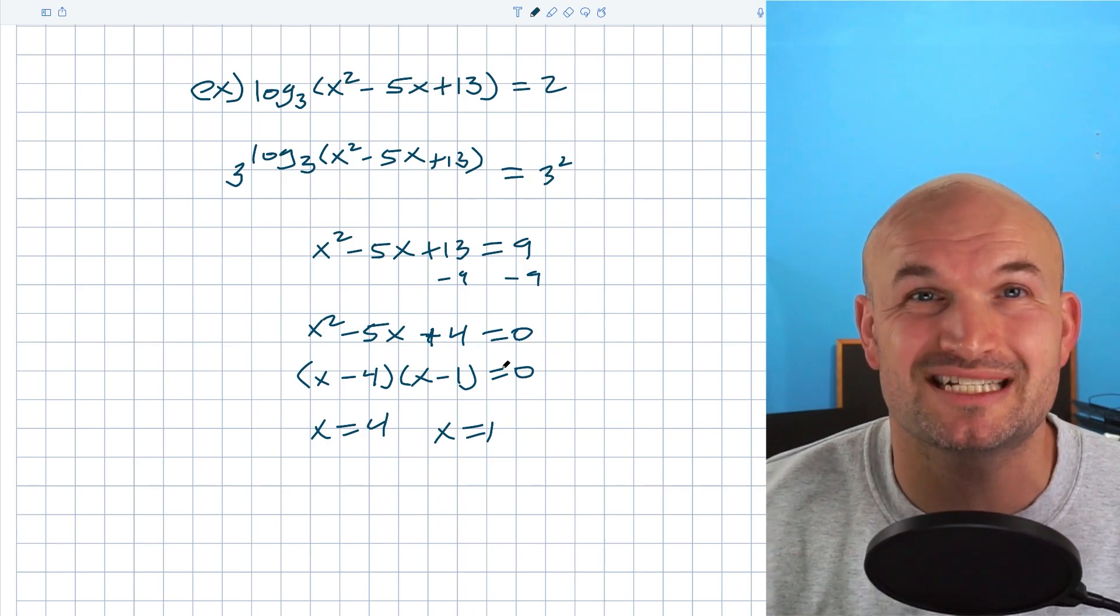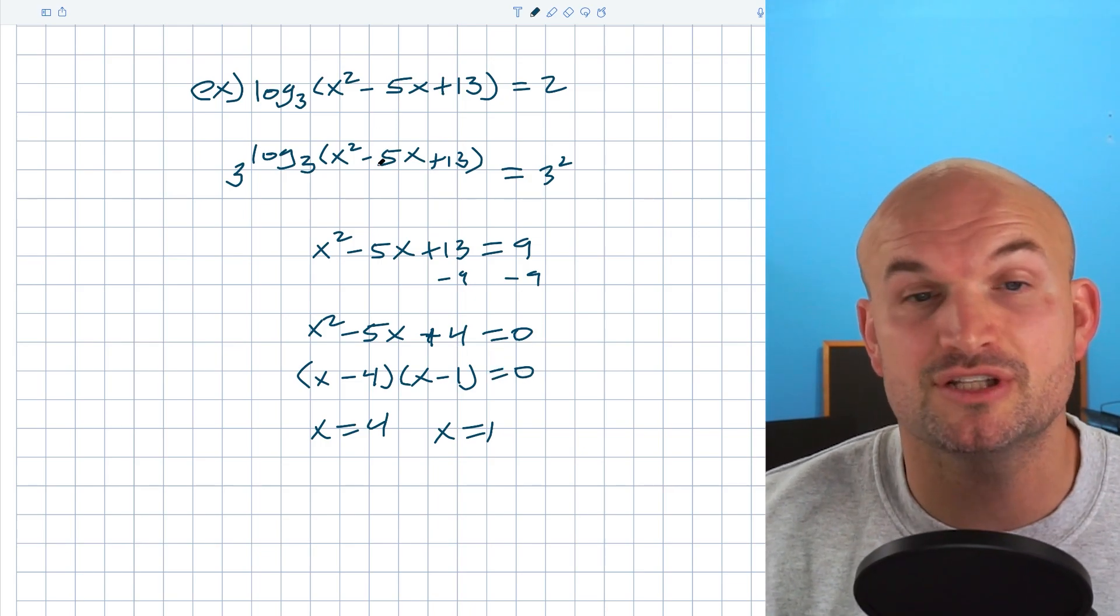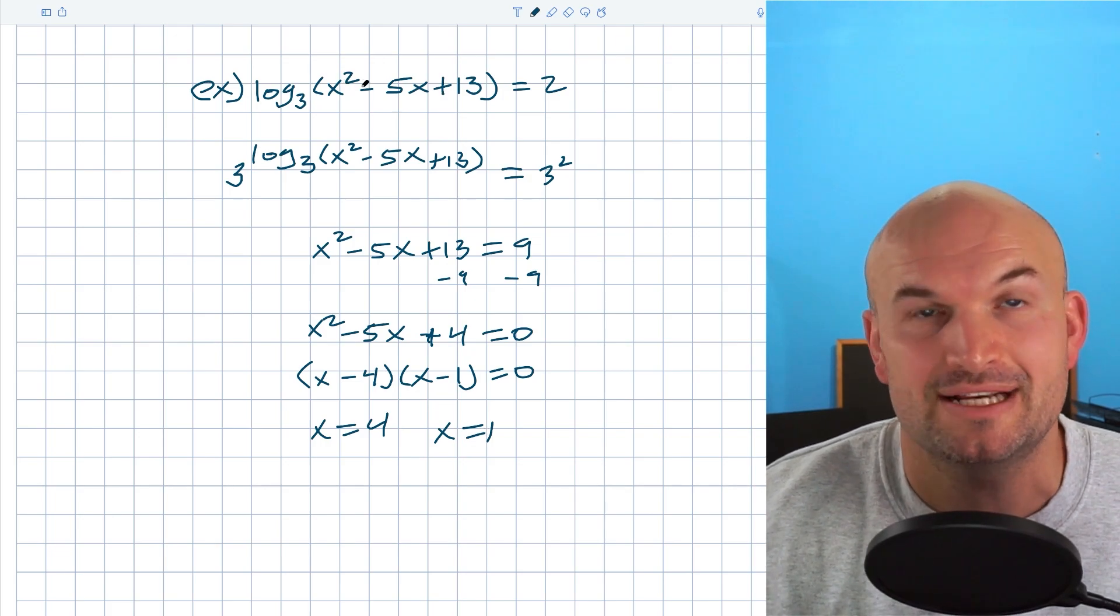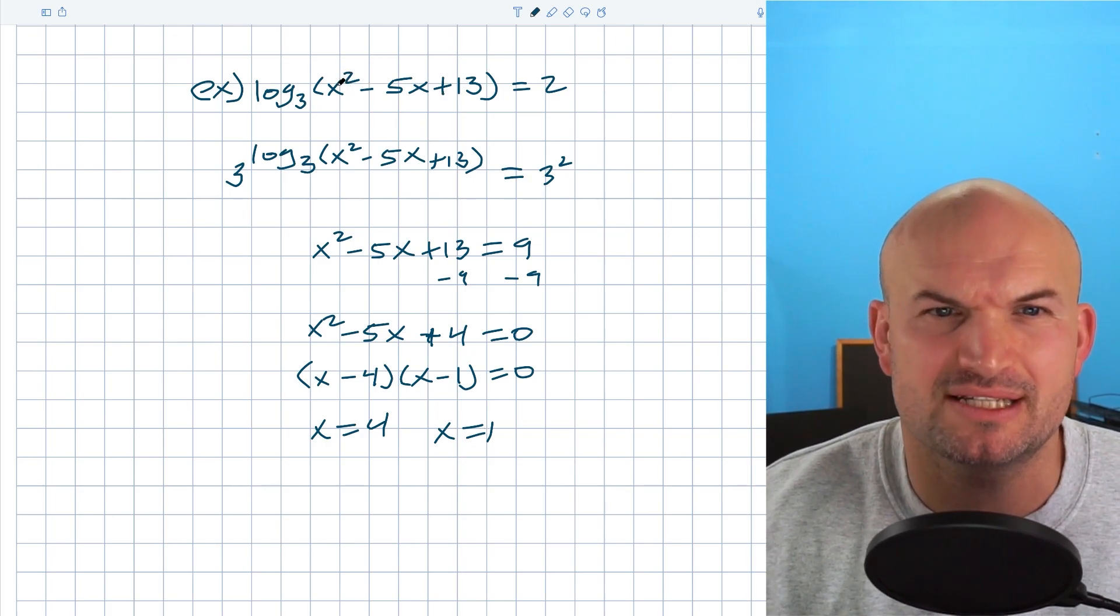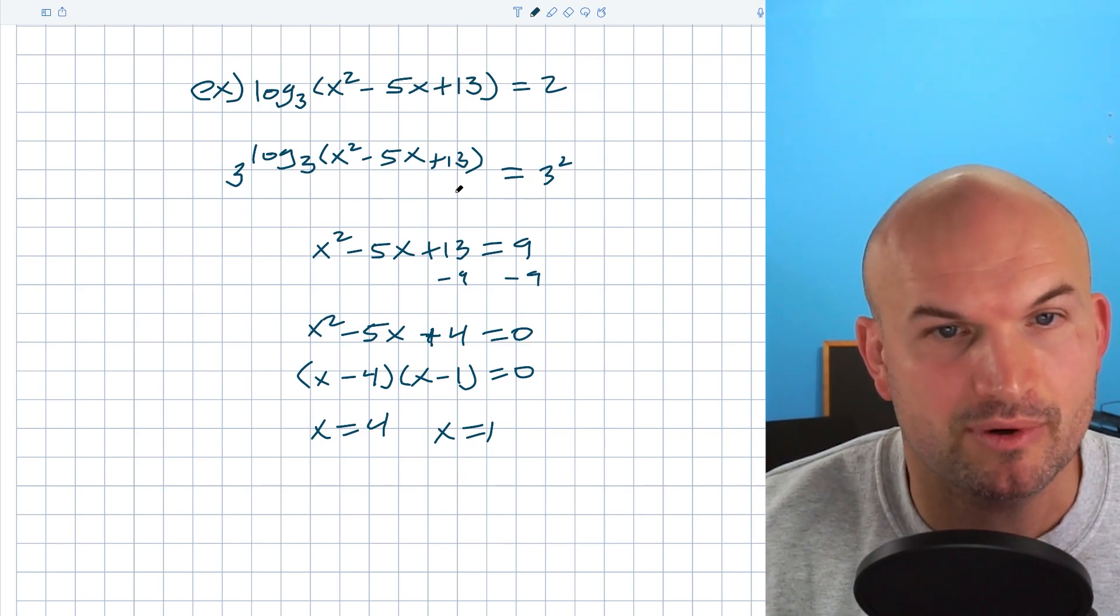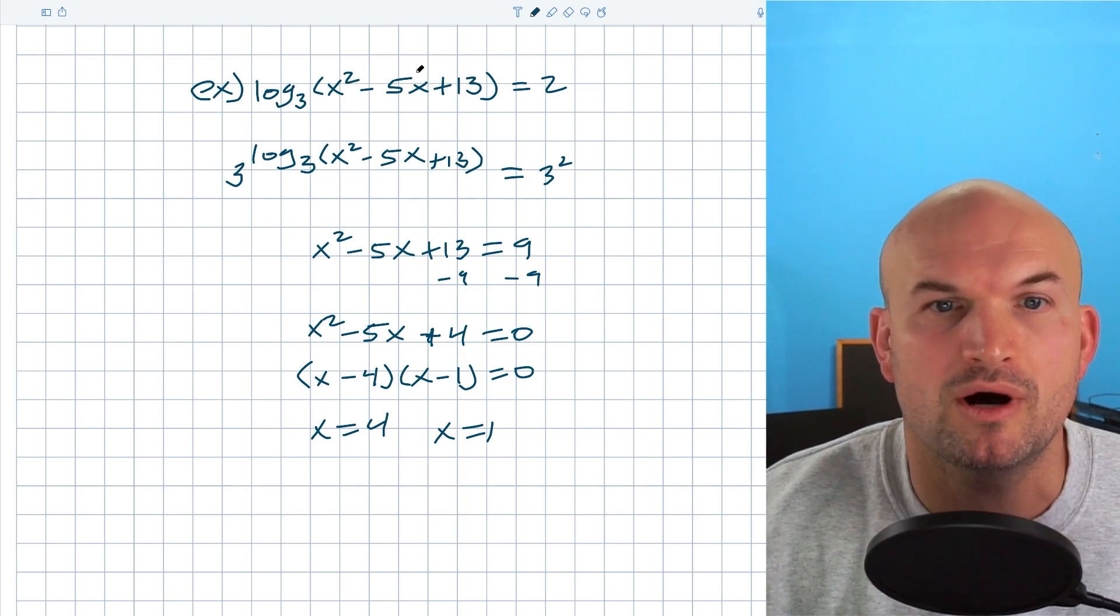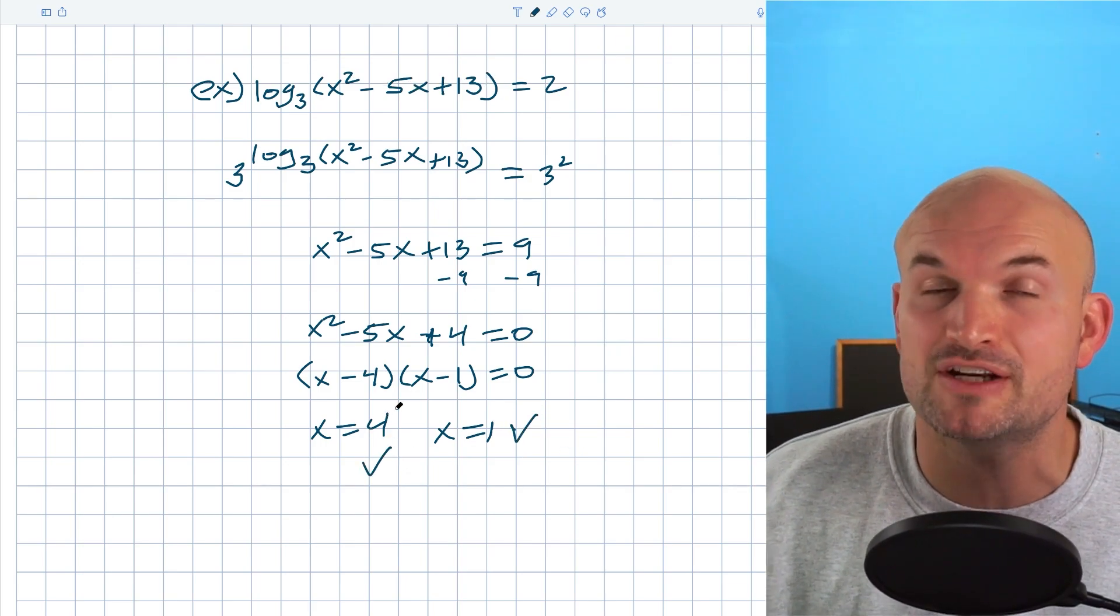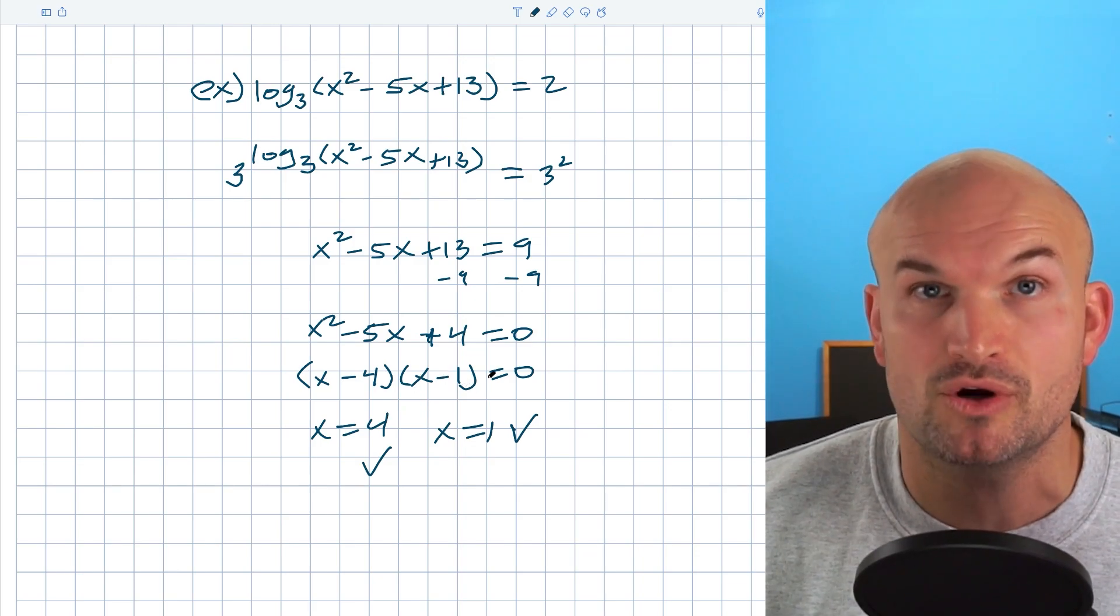Now it's very important with logarithmic equations, especially when we have more than one solution to make sure the solutions are going to work. So again, by plugging in a 4 and a 1, I better get a 16. So when I just go ahead and plug these in, that's going to be 16 minus 20, which is negative 4 plus 13, which would be 9. That one works. If I plug a 1 in here, that's going to be 1 minus 5 plus 13. So both of these solutions are going to work. So indeed, both of them do indeed work.